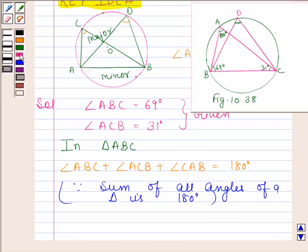Substitute the value of angle ABC and angle ACB. Angle ABC is equal to 69 degrees and angle ACB is equal to 31 degrees.